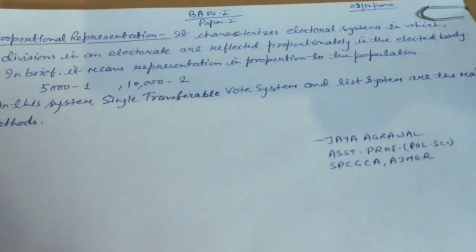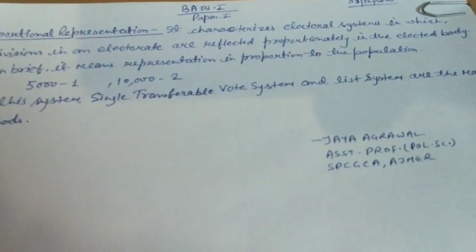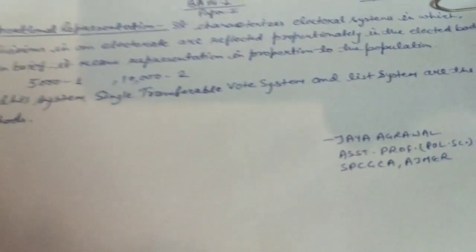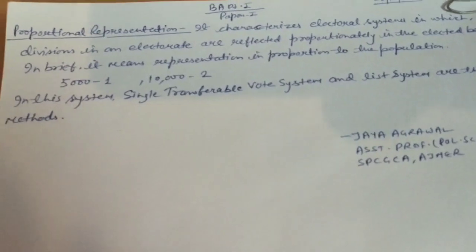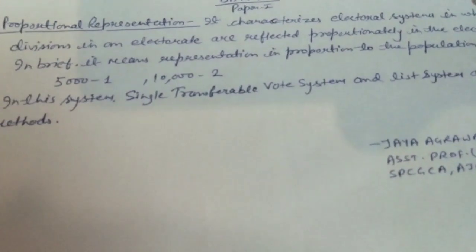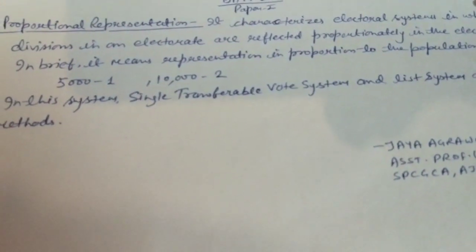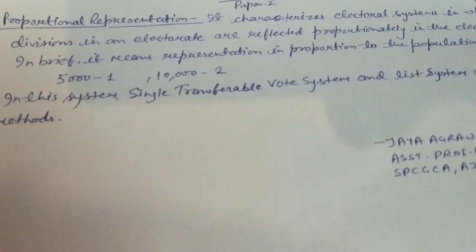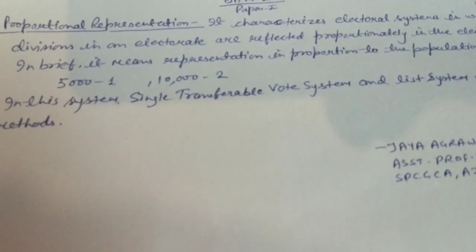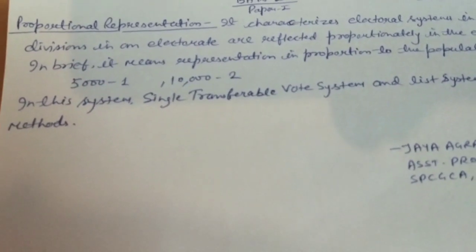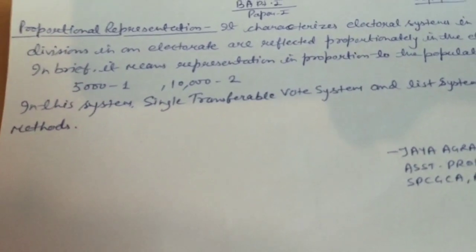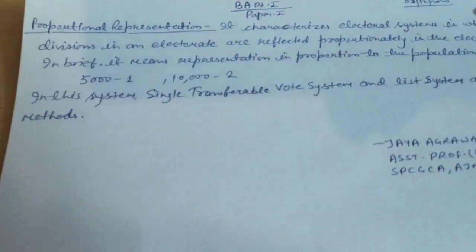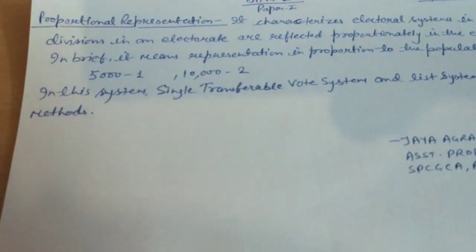In the Single Transferable Vote system, you have one vote but you have preferences which you are to indicate. Votes are passed on one by one and thus representatives are elected from the available seats according to set criteria.